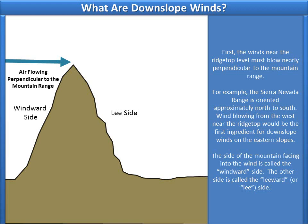The side of the mountain facing into the wind is called the windward side, and the other side is called the leeward or lee side.